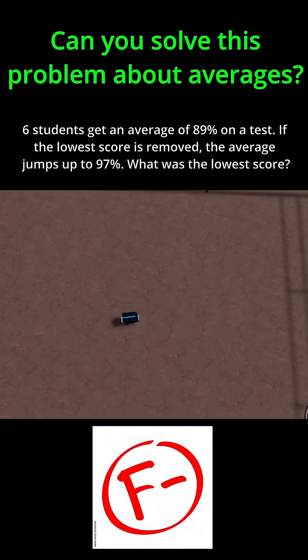In this problem, it says that 6 students get an average of 89% on a test. If the lowest score is removed, the average jumps up to 97%. What was the lowest score on this test?